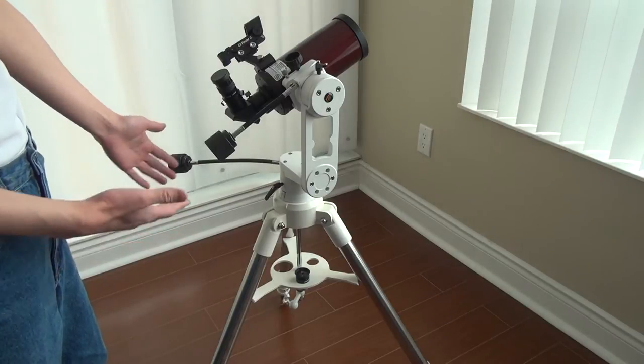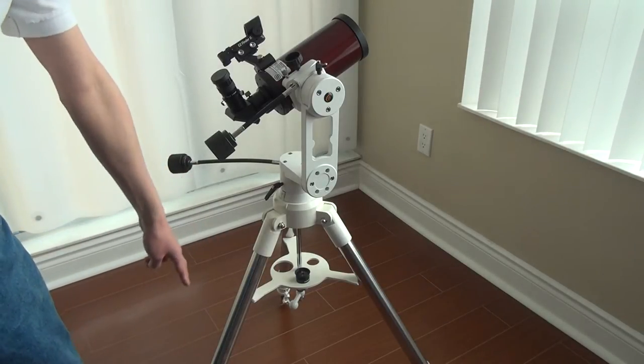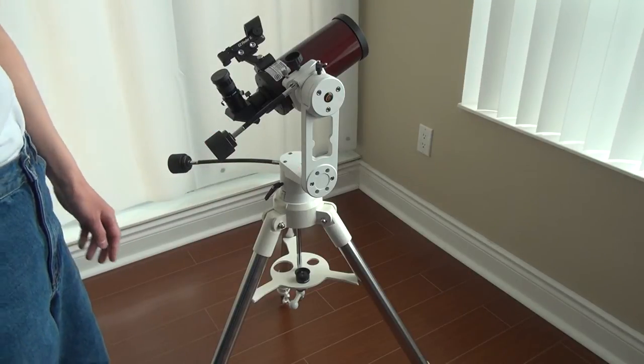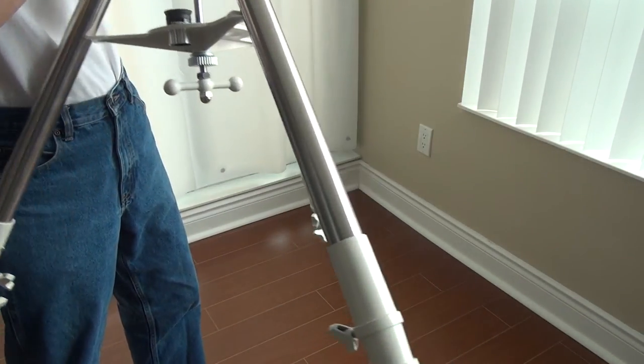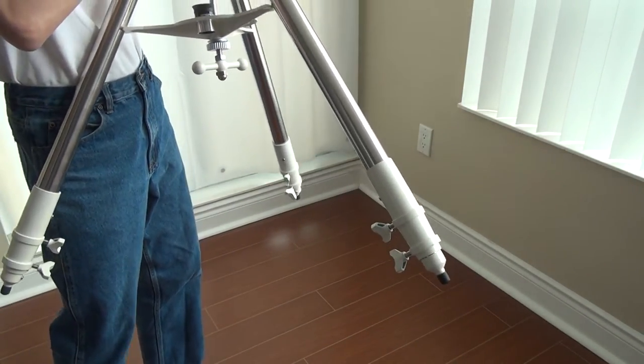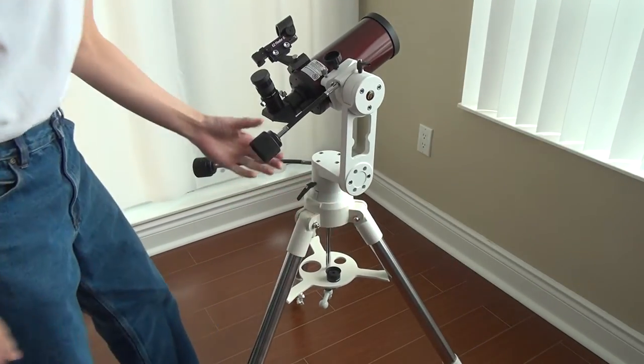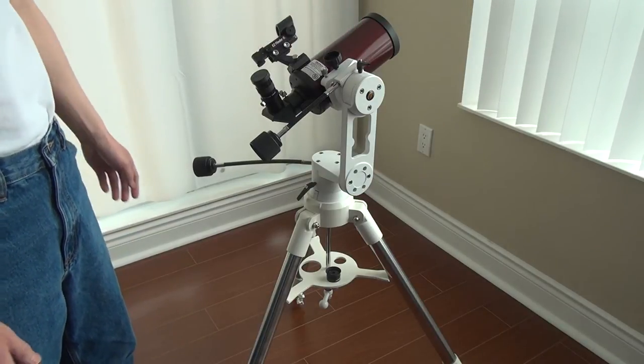The mount itself is mostly made of metal. The legs are stainless steel, mount head is aluminum. The only non-metallic parts would be the rubber tipped feet that you can see here, the black portion there, and the knobs and the handles. These are presumably the only plastic parts.